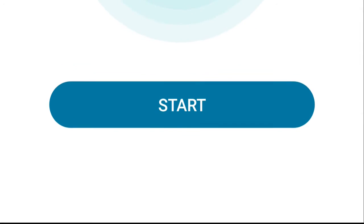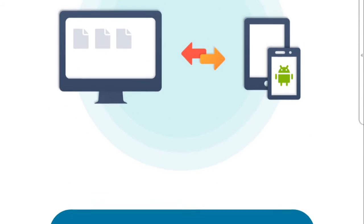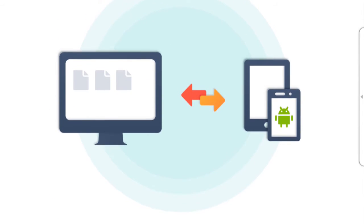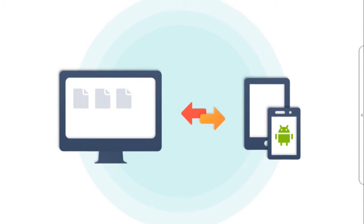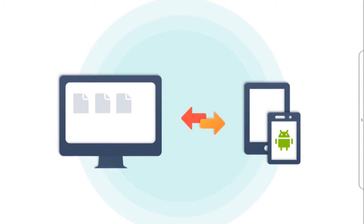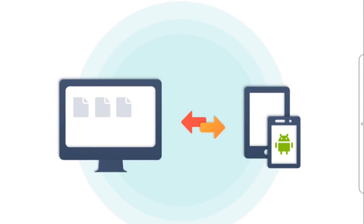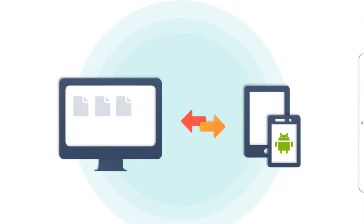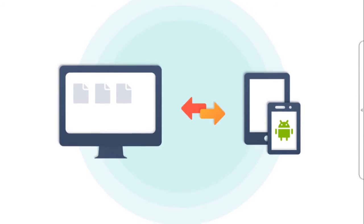The app has one function that I absolutely love, and it is a PC file transfer. You start the service on your app, and you punch in the IP address the app gives you into your computer's browser. Then you can just go through your browser and move files back and forth between your computer and the phone. It is ridiculously nice. I use this function all the time.